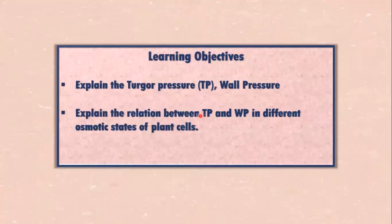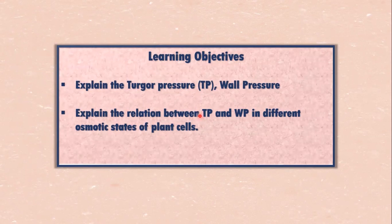Learning objectives: explain turgor pressure and wall pressure, and explain the relation between turgor pressure and wall pressure in different osmotic states of plant cells.